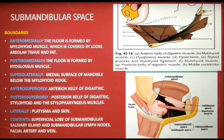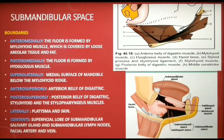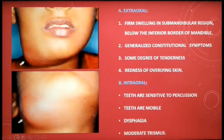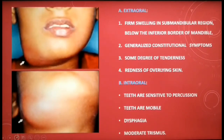Infection from the submandibular salivary gland may also spread via lymphatics. Submandibular space infections can also result from infections originating from the middle third of the tongue and the posterior part of the floor of the mouth. Diagnosis is confirmed by the presence of a firm swelling in the submandibular region just below the inferior border of the mandible, along with generalized constitutional symptoms like fever, lethargy, and malaise. There will be tenderness and erythema of the overlying skin, with intraoral findings of tender and mobile teeth, dysphagia, and moderate trismus.